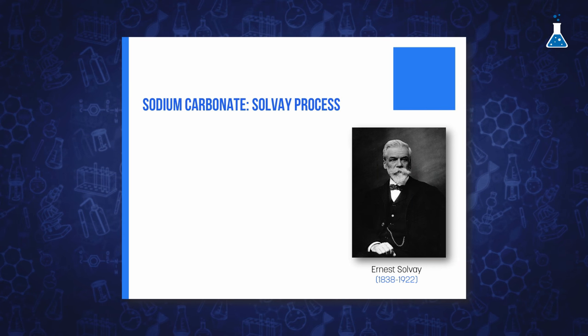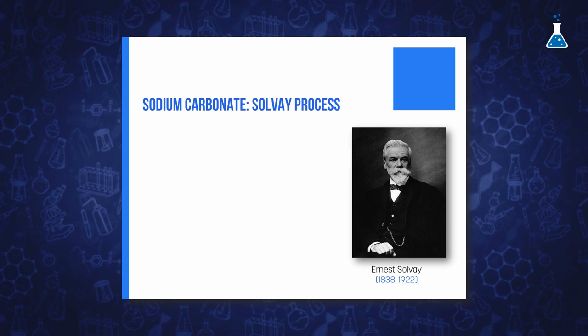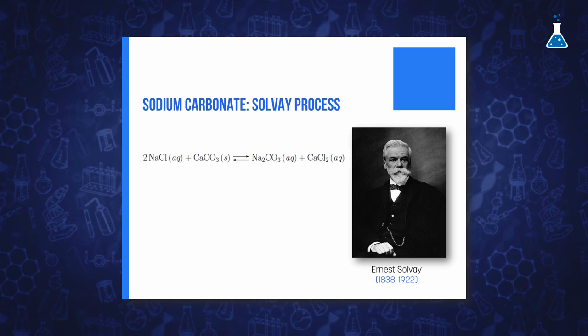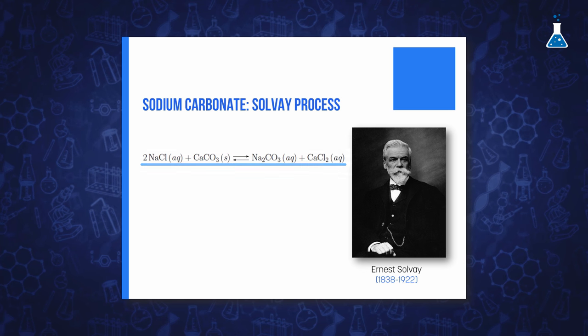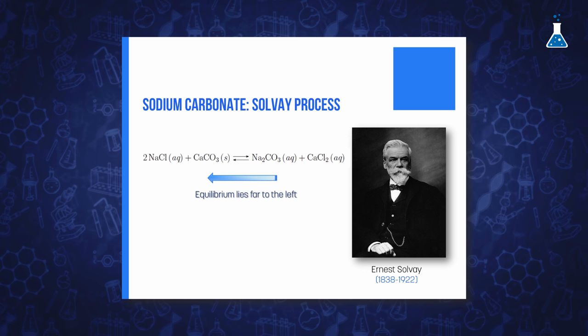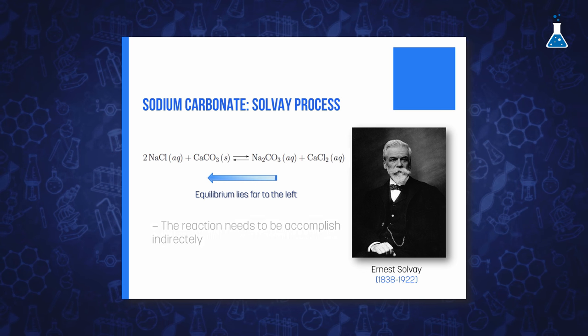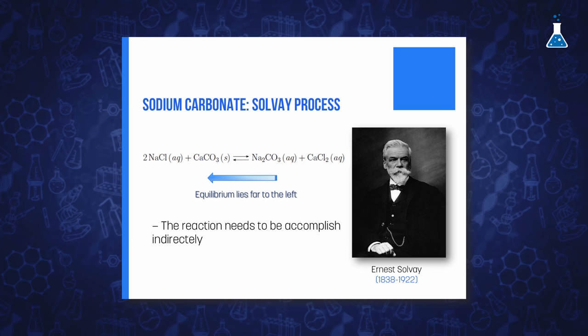Although in the United States most sodium carbonate is produced from the mineral trona, because it comes from large deposits in Wyoming, in other parts of the world sodium carbonate is obtained by the Solvay process. This process was designed by Belgian chemist Ernest Solvay, and it consists of converting table salt and limestone to soda ash and calcium chloride, as illustrated in the following equation. The problem is that the equilibrium of this reaction lies far to the left, so it cannot be accomplished directly; instead, the product is obtained through a set of reactions that overall yield the desired equation.